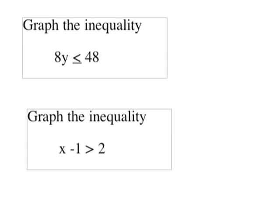We've got two problems here, and they're both about graphing inequalities with just one variable. The first one is 8y less than or equal to 48, and the second one is x minus 1 is greater than 2. The first step in graphing an inequality like this is to make sure it's solved for the variable, and then we'll move on to graphing.